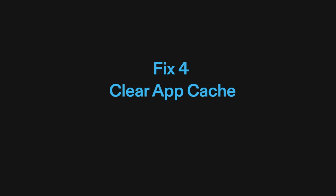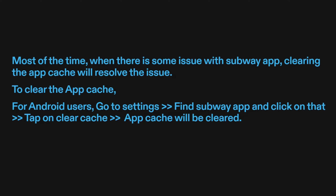Fix four: clear app cache. Most of the time, when there is some issue with the Subway app, clearing the app cache will resolve the issue. To clear the app cache for Android users, go to Settings, find the Subway app, and click on it. Tap on Clear Cache and the app cache will be cleared.